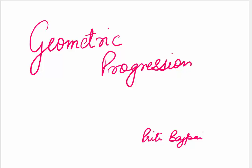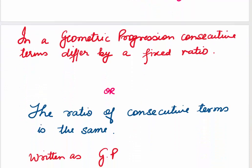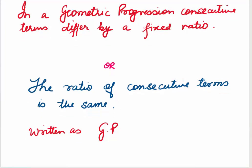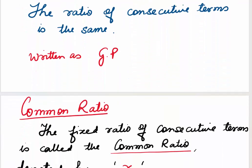Hi everyone, welcome to today's topic: Geometric Progression. Given any progression, if the ratio of two consecutive terms is fixed, it's called a geometric progression. In other words, whenever the ratio of consecutive terms is the same, or constant, we call it a geometric progression — written in short as GP.